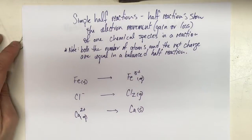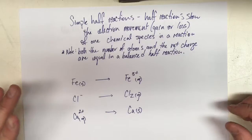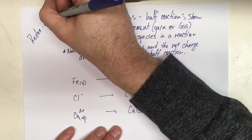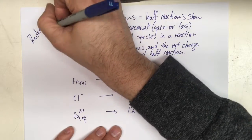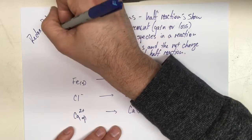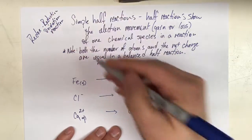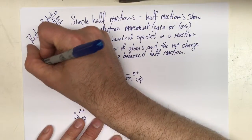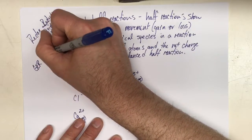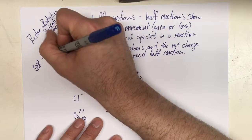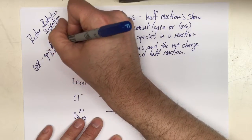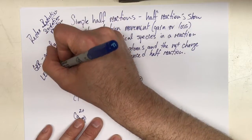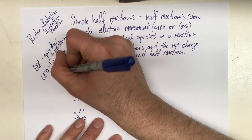In this video we're going to introduce the idea of simple half reactions. We're studying redox, which stands for reduction-oxidation reactions. A redox reaction has both a reduction and an oxidation occurring at the same time. The gain of electrons is reduction, and the loss of electrons is oxidation.